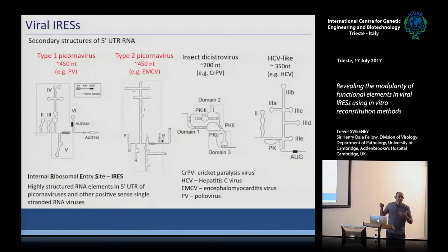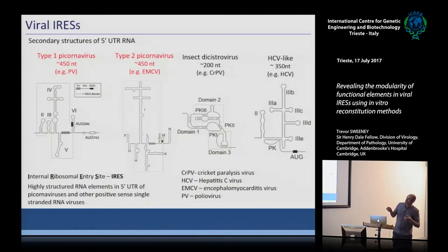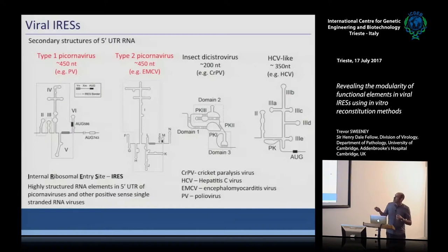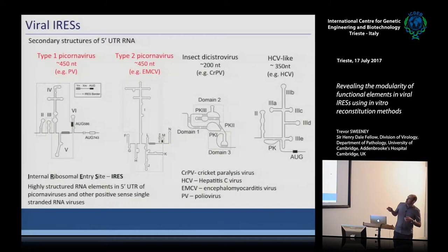The first IRES was identified around 1988, first in poliovirus, and then very quickly other viruses were shown to have similar mechanisms. There are four main classes of IRESs described to date. The type 1 picornavirus IRES is about 450 nucleotides long and found in enteroviruses such as poliovirus or EV71. The type 2 picornavirus IRES is found in EMCV and foot-and-mouth disease virus. Another class is the dicistrovirus intergenic region IRES.